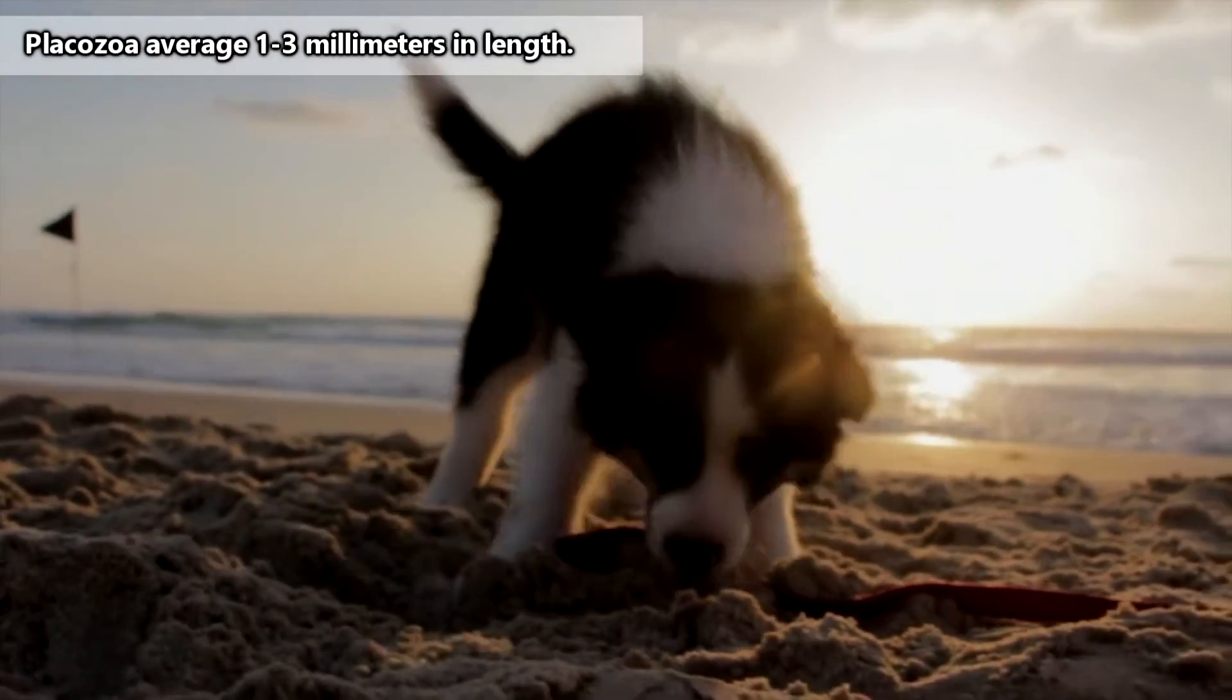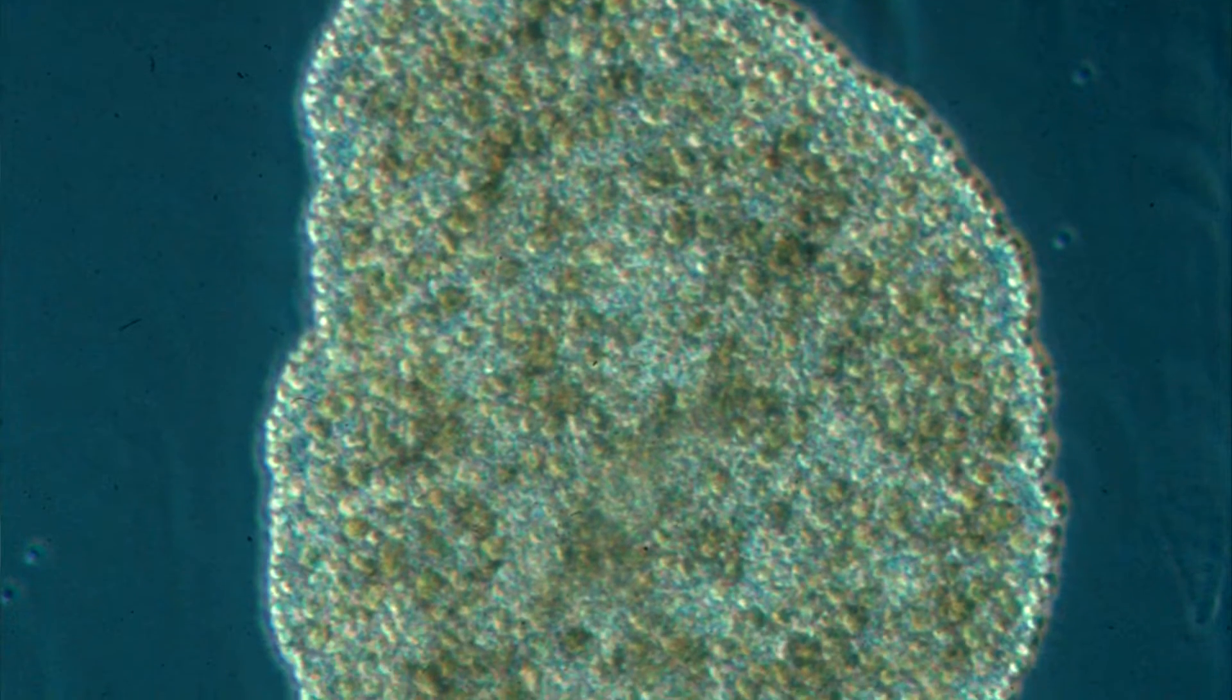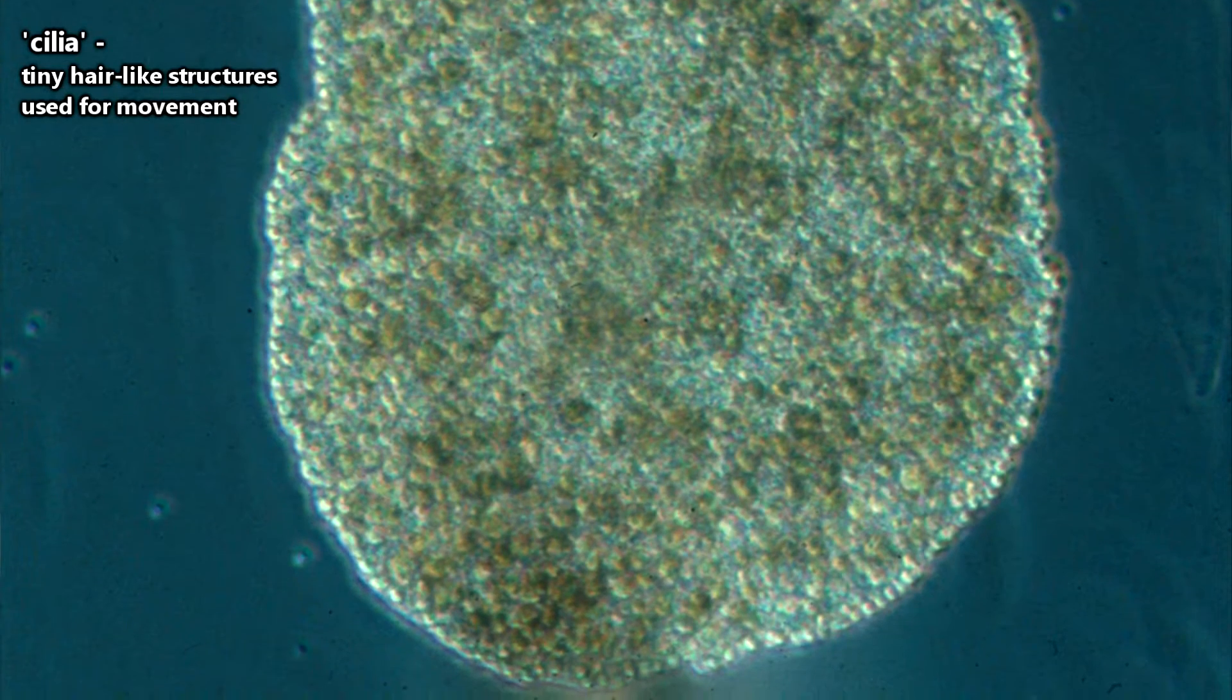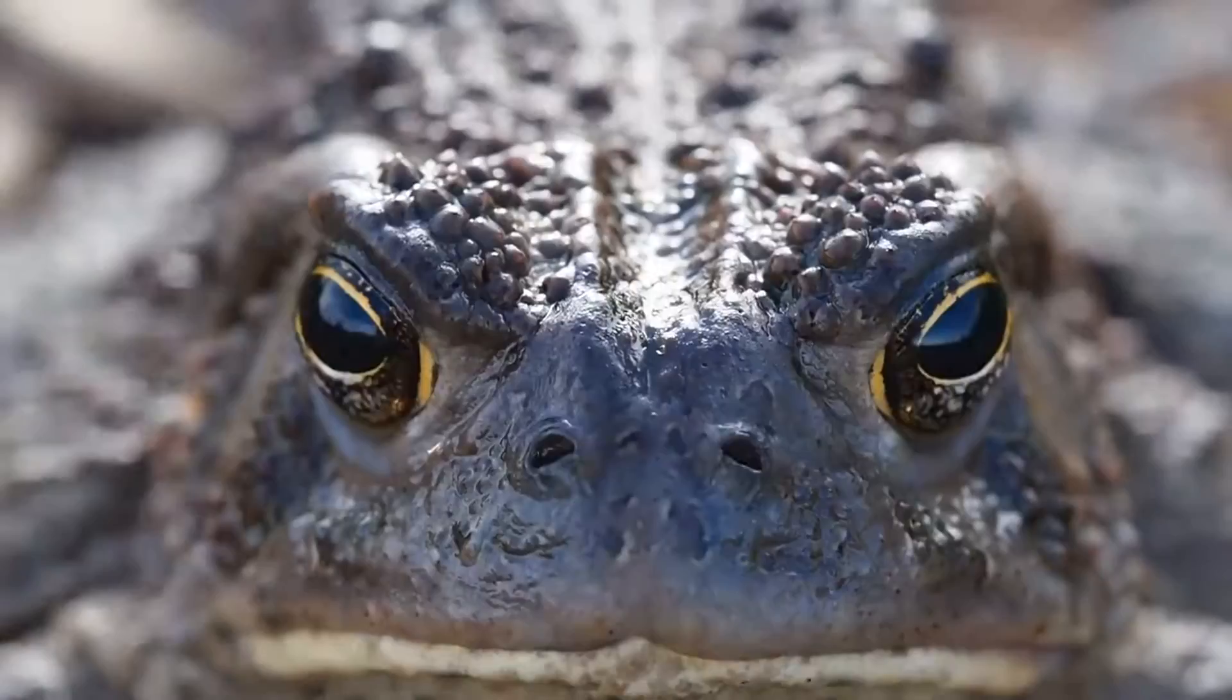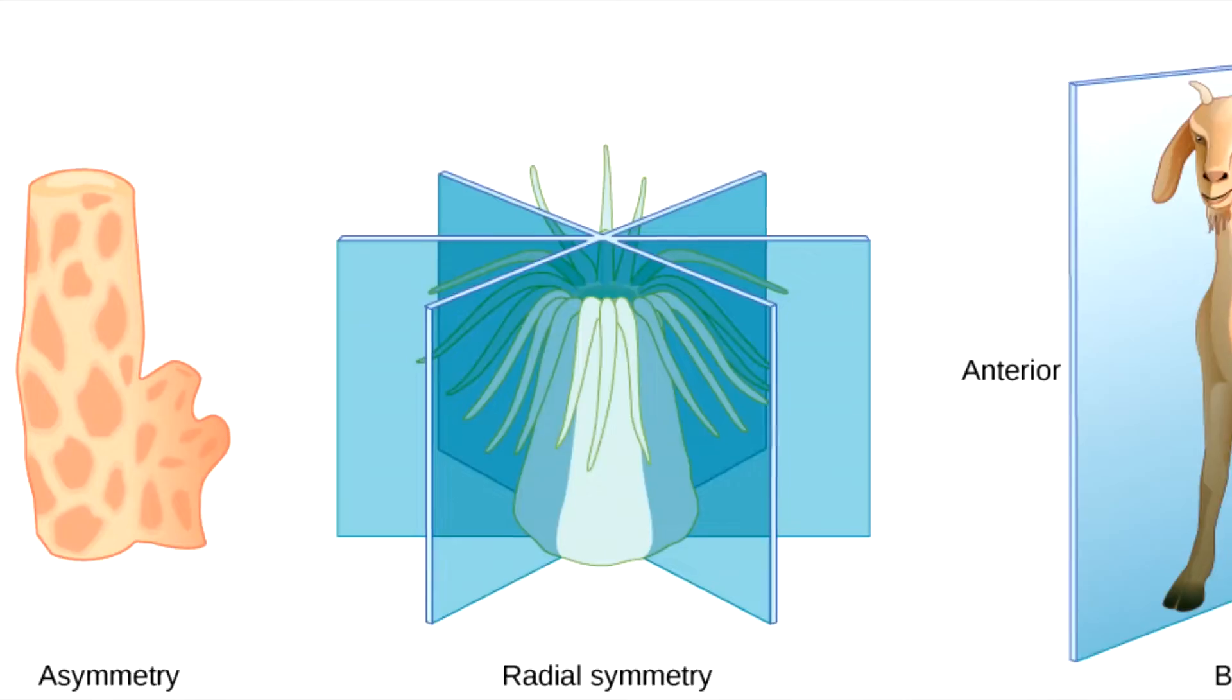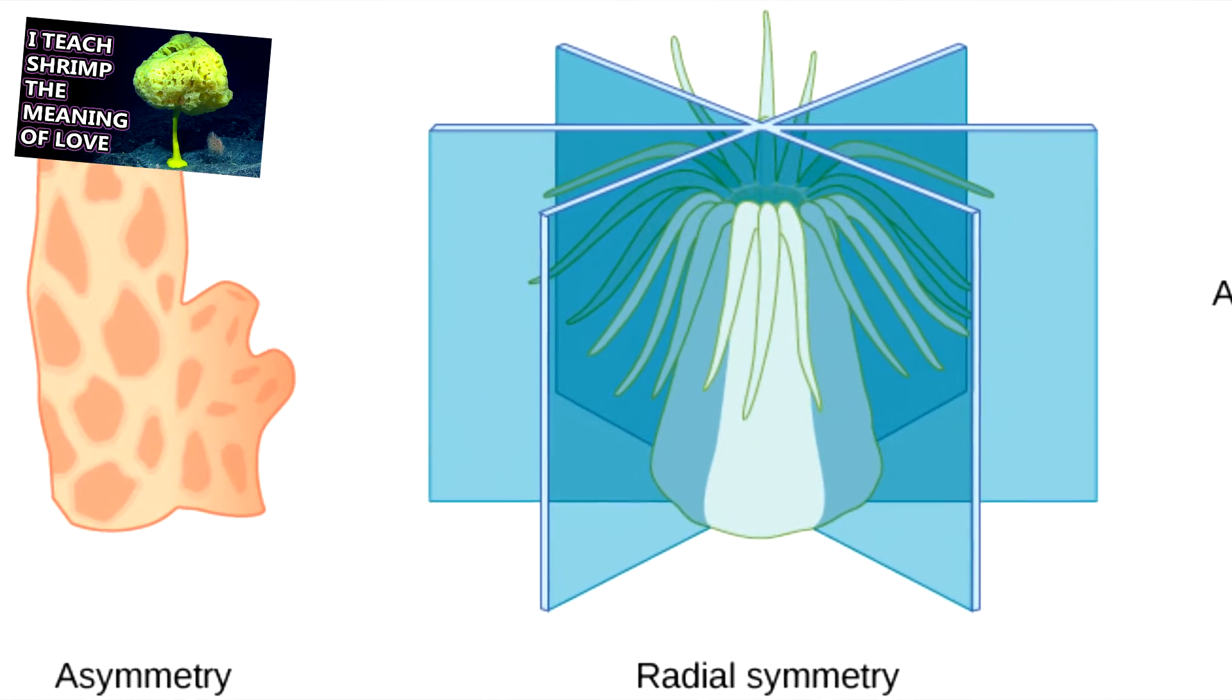Most known placozoa are about the size of a grain of sand. They're sort of circular in shape, they appear relatively flat, and they have tiny hair-like structures which they use for movement. Placozoa don't have legs or feet, noses or eyes, or even a heart or a butthole. They don't have any kind of symmetry either, though they do have a definitive top and bottom.